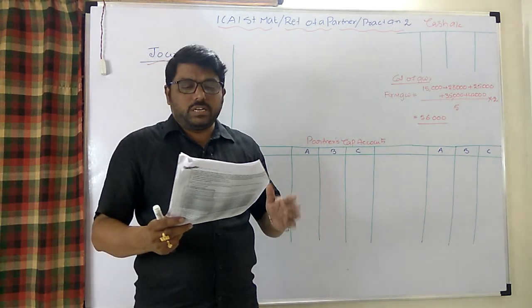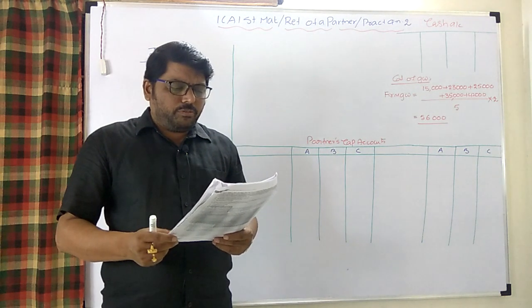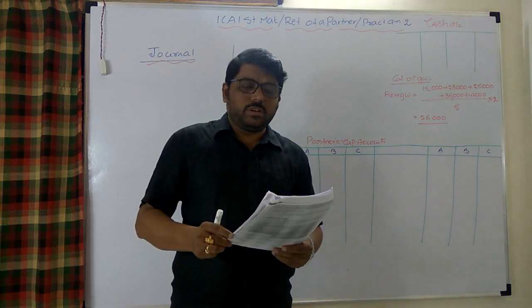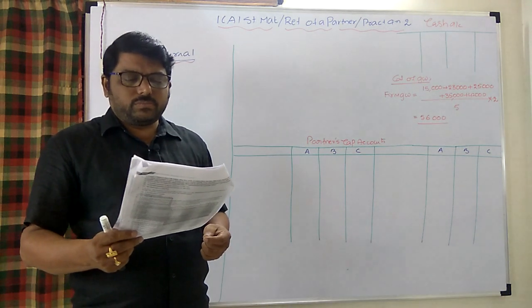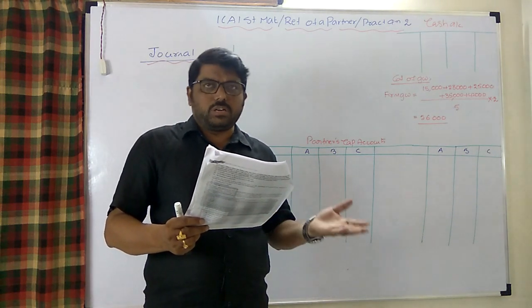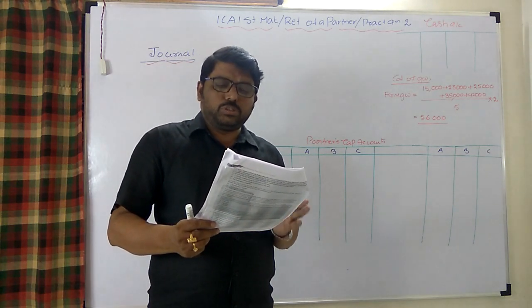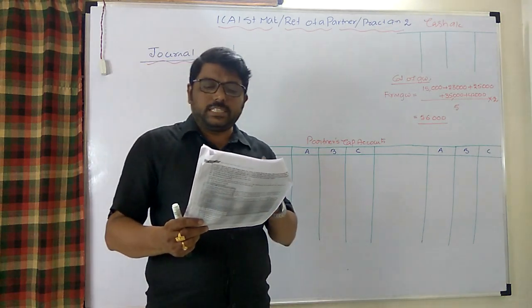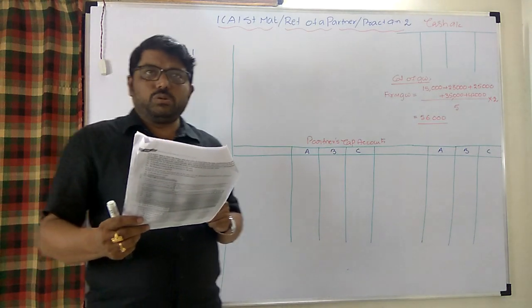On the date of retirement, fixtures are revalued at 39,800 against the earlier book value of 30,000, giving an increase of 9,800 which is a gain credited to revaluation or P&L adjustment account. A provision of 2% is to be made on debtors of 90,000, resulting in an anticipated loss of 1,800.